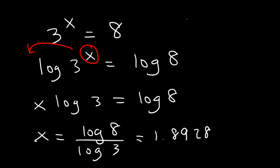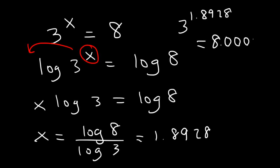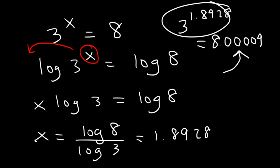You can check your answer: 3 raised to the 1.8928 gives approximately 8.00009. Granted, this is rounded, so this is going to be very close to 8.